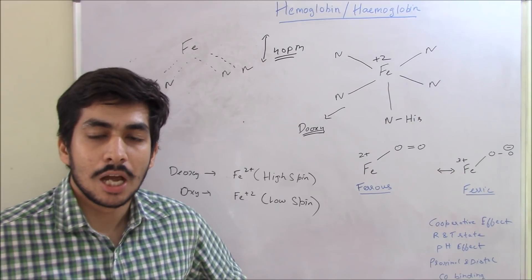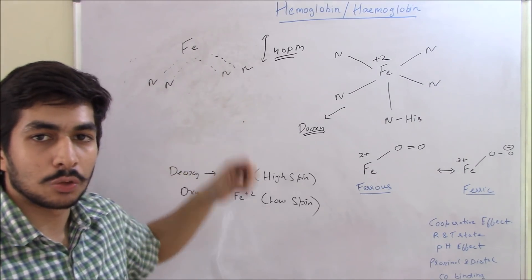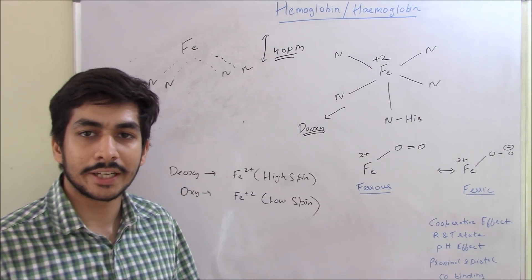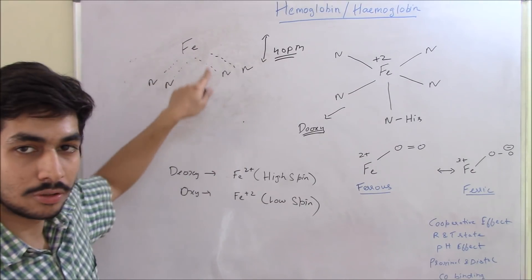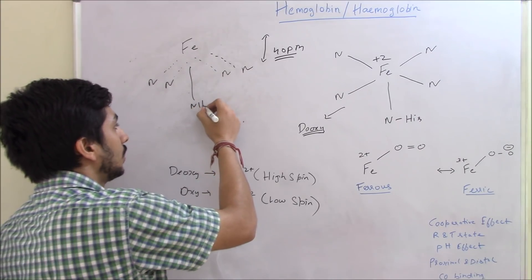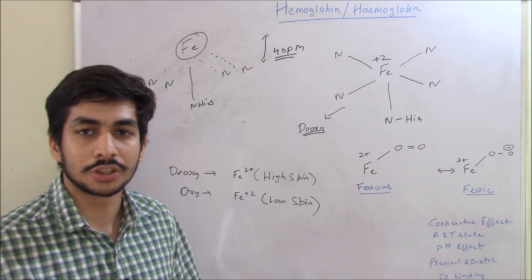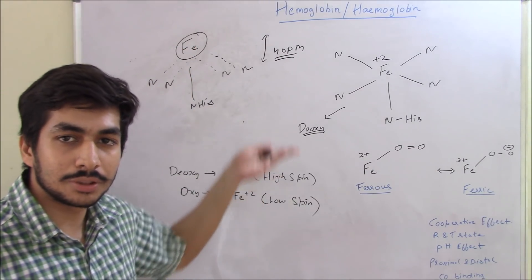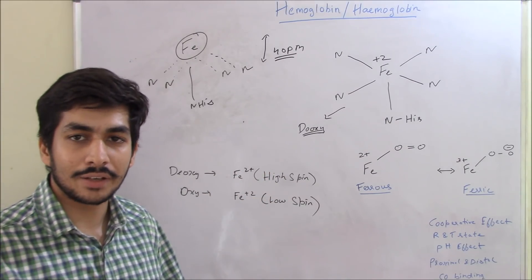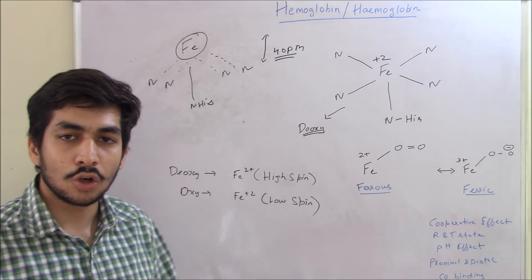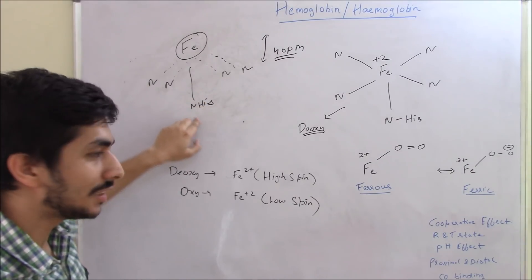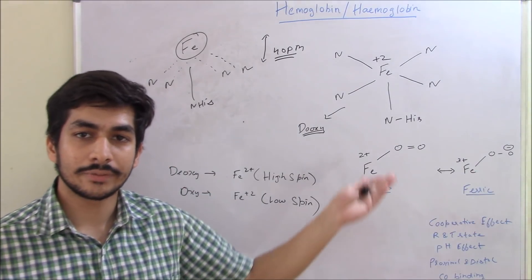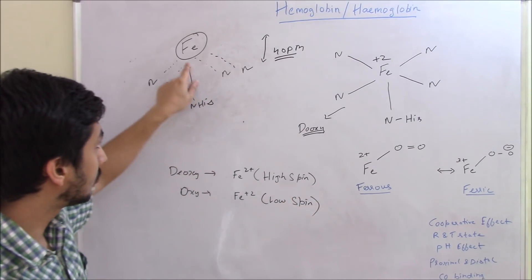Once oxygen binds to the iron, it leads to the formation of the low spin state, which is much smaller in radius compared to the high spin state. So the iron lowers its position toward the porphyrin ring. The histidine group attached to this iron is further connected to other amino acids and the other chains of the hemoglobin tetramer.